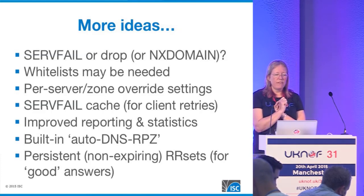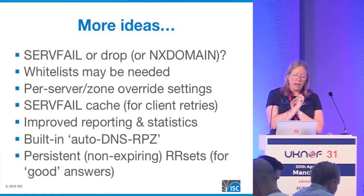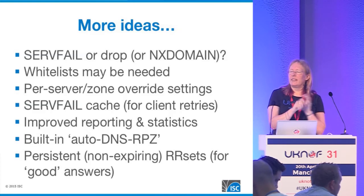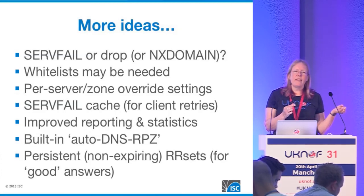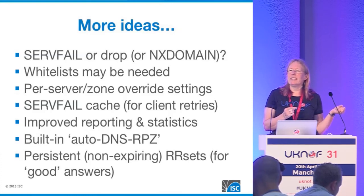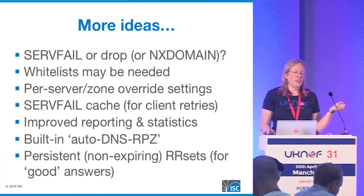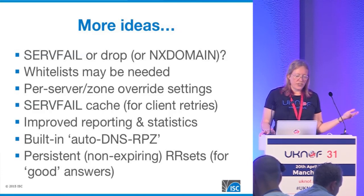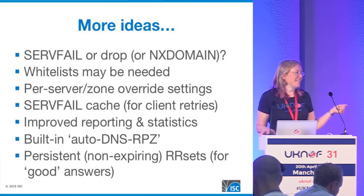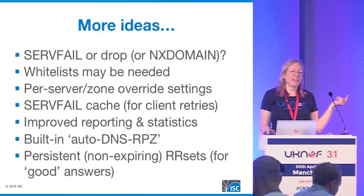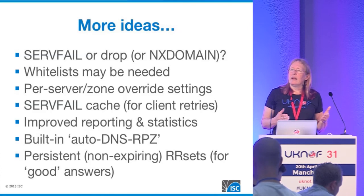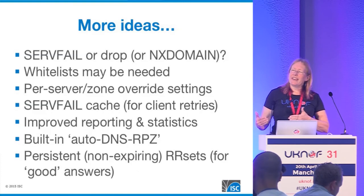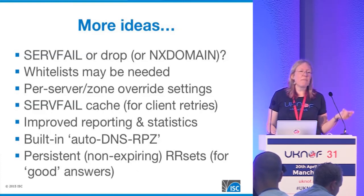We've thought about whitelists, about having override settings per server and per zone, and about improving reporting and statistics. Somebody has suggested having automatic detection of a zone under attack, and then automatically implementing an authoritative zone for it. There is also the big issue of how to handle the good traffic — ideally you want to be able to give back good answers to good queries for names in the domain under attack. One suggestion was to not expire the good answers you've got. Another idea I had last night was: we know which are the good answers we've had before because we have records in cache for them, so maybe we should whitelist the queries for the things that are already expired in cache. I only thought of it last night.